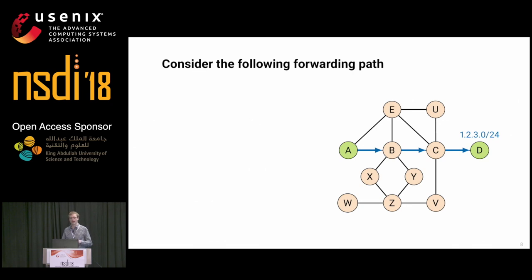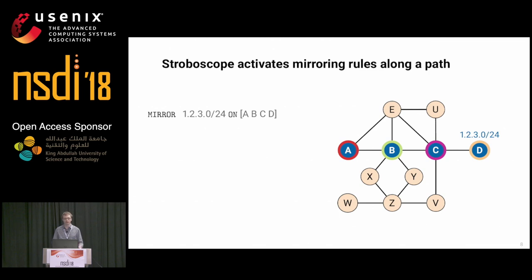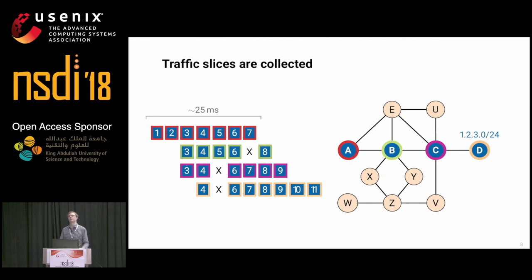Assuming a path taken by traffic in the network, in our framework the operator expresses requirements in a high-level declarative language — for example, mirror traffic towards a destination prefix along a specific path A, B, C, D. That's the only input the operator gives us. Stroboscope then conceptually places mirroring rules on every single router on the path. Activating them at roughly the same time gives us sets of packets forwarded by every single router. Because we have the actual packets in the payload, we can match them across traffic slices and synchronize without needing global clock synchronization — we use the data itself as a marker.